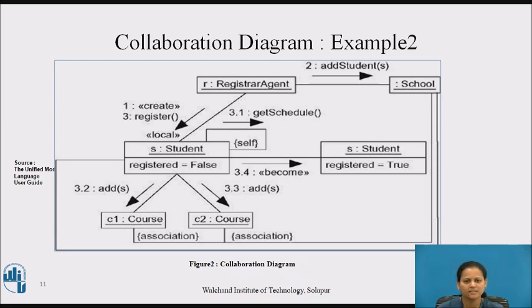For both iteration and branching, the UML does not prescribe the format of the expression inside the brackets. You can use pseudocode or the syntax of a specific programming language.